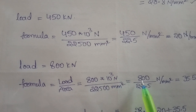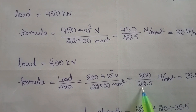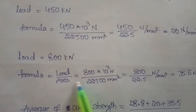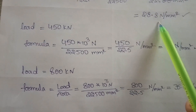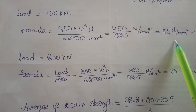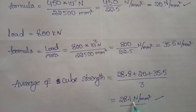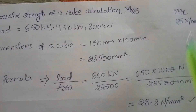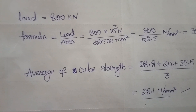800 x 10 cubed, two zeros cancel, giving 800 divided by 22.5 N per mm squared, which equals 35.5 N per mm squared. So the average cube strength is 28.8, 20, and 35.5 N per mm squared divided by three, giving 28.1 N per mm squared. We need M25 — mix 25 N per mm squared. The final average strength is 28.1 N per mm squared, which is greater than 25 N per mm squared. Strength is OK.